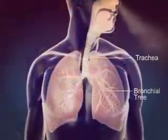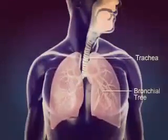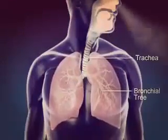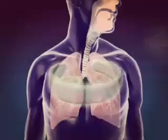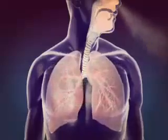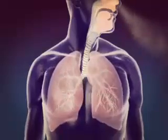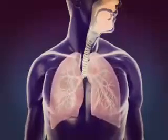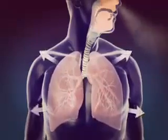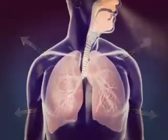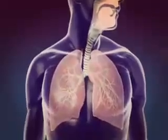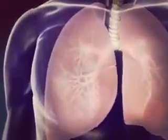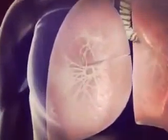The bronchioles terminate into clusters of air sacs called alveoli, which are surrounded by capillaries. Gaseous exchange takes place within the lungs by diffusion from the alveoli to blood capillaries.